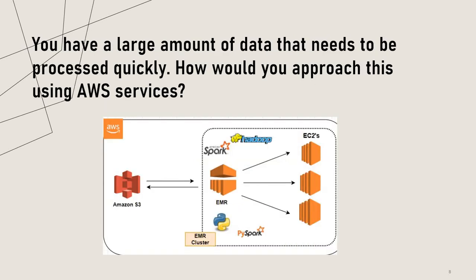You have a large amount of data that needs to be processed quickly. How would you approach this using AWS services? I would use Amazon S3 to store the data and Amazon EMR to process it using Hadoop or Spark. EMR provides a managed Hadoop and Spark service that allows you to easily process large amounts of data quickly and efficiently. Additionally, I would use Amazon Redshift to store and analyze the processed data.